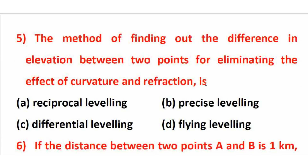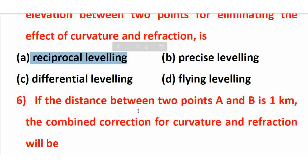The method of finding the difference in elevation between two points while eliminating the effect of curvature and refraction is reciprocal leveling. The right answer is reciprocal leveling. In reciprocal leveling, you can eliminate curvature correction, refraction correction, and collimation error — making it a very accurate method. It is used when there are obstacles like rivers, ponds, or lakes between two points.